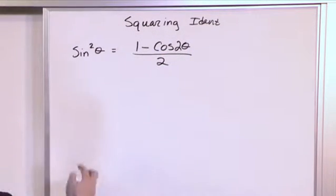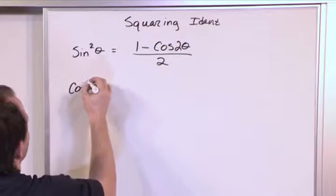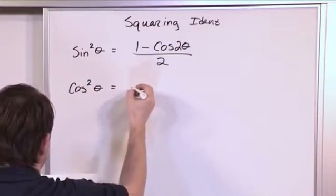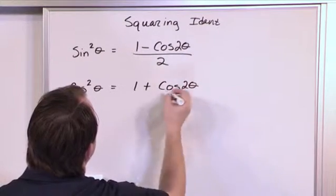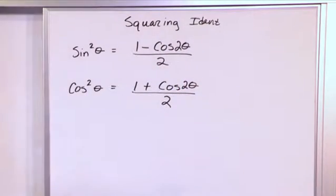Now you'll notice a resemblance to cosine squared of an angle. That's going to be 1 plus cosine of 2 times the angle that you're talking about over 2. So they're basically the same thing, they're separated by a plus there.